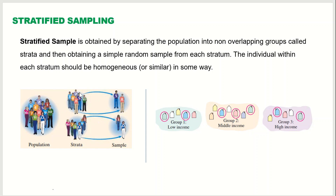The individuals within each stratum should be homogeneous or similar in some way. For example, in the first group these are all males and these are all females, so there is homogeneity. After dividing the population into strata where each stratum has uniform or similar characteristics, from each stratum we use the simple random technique to select the members.